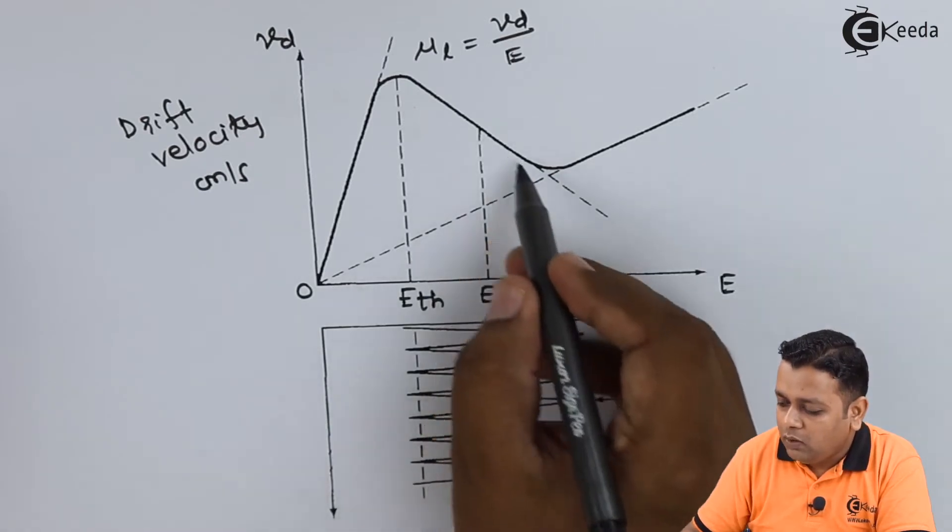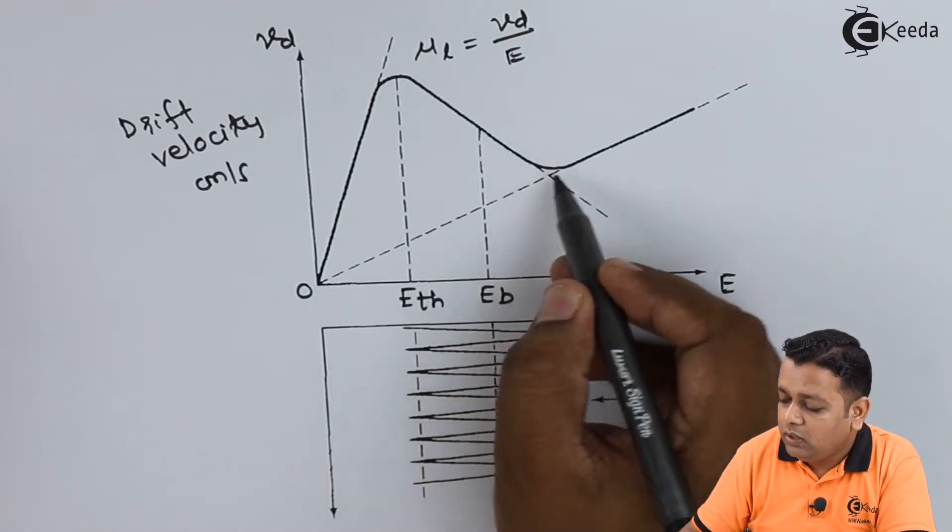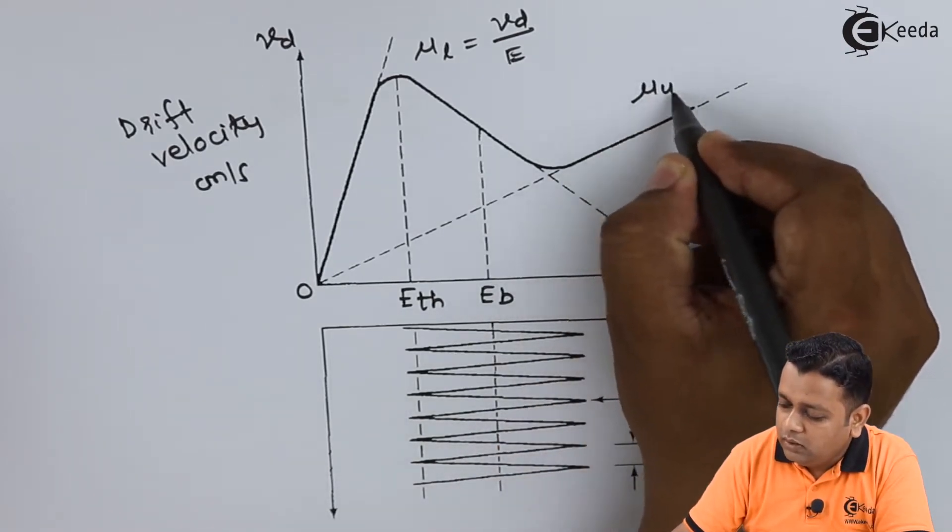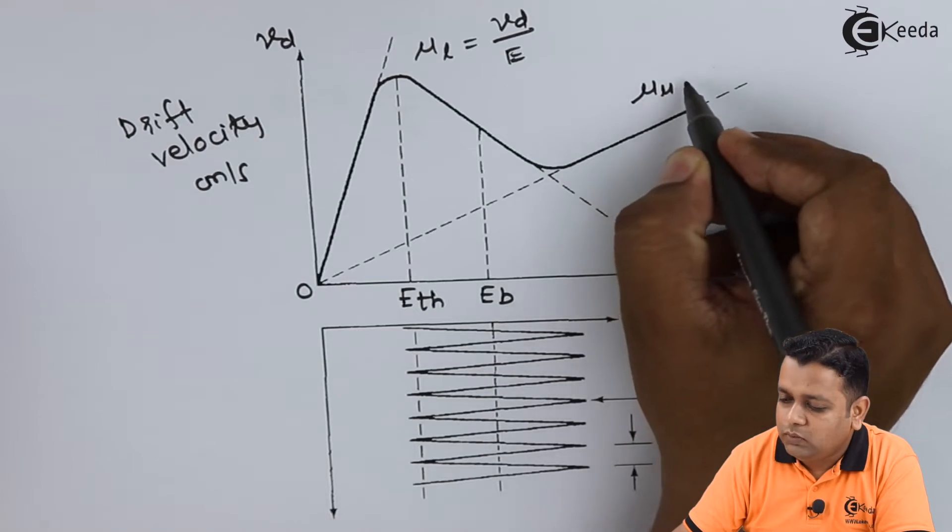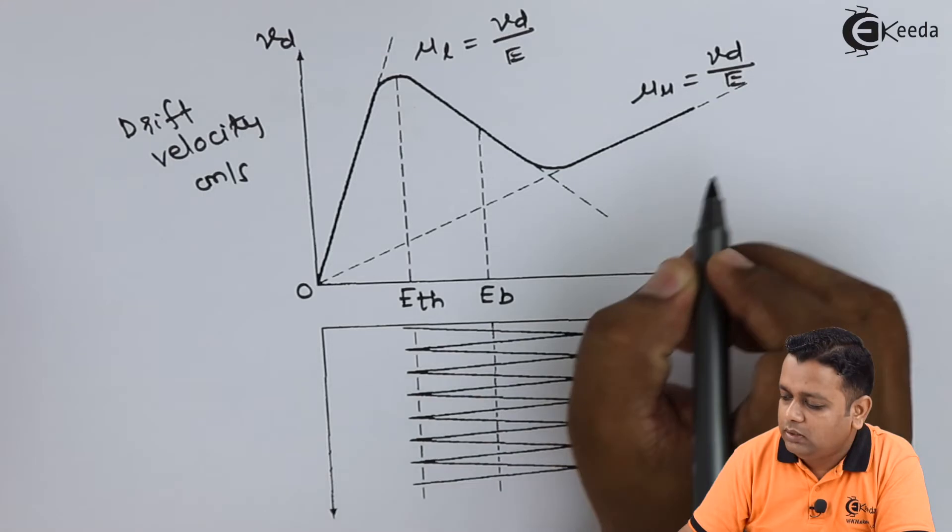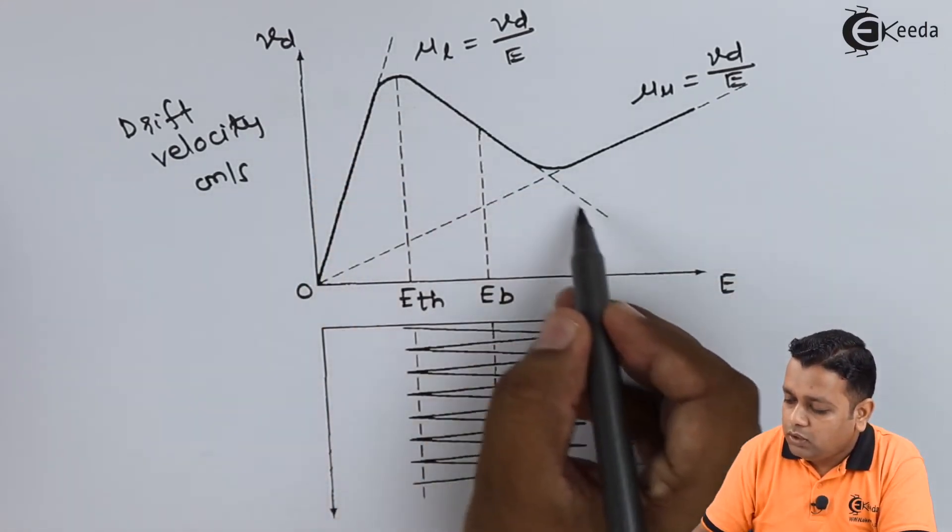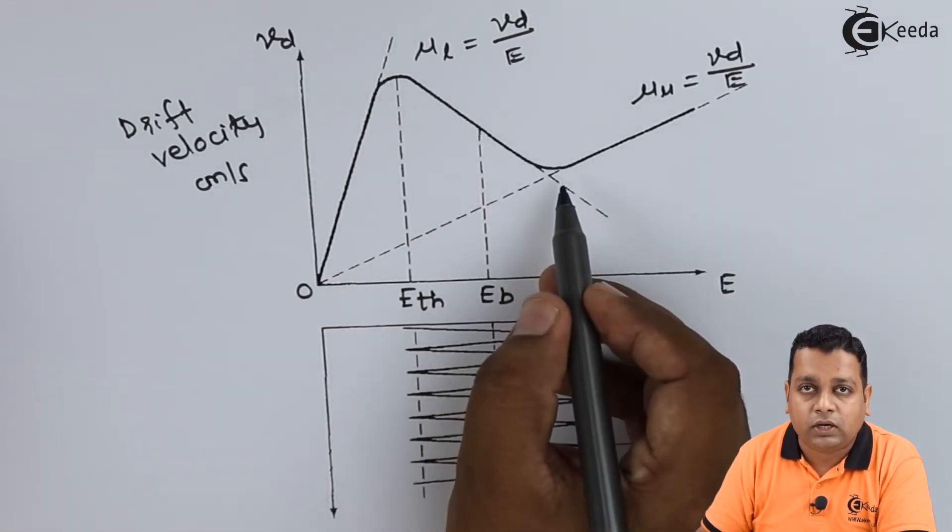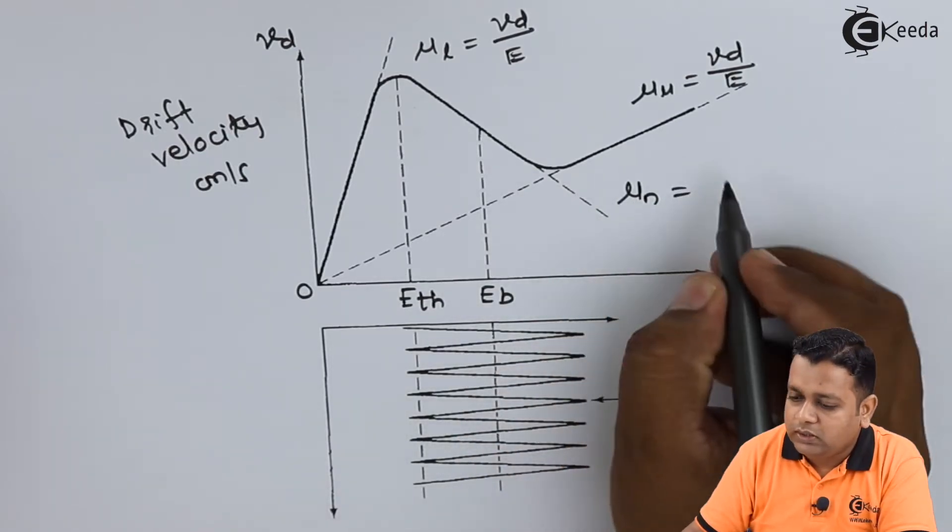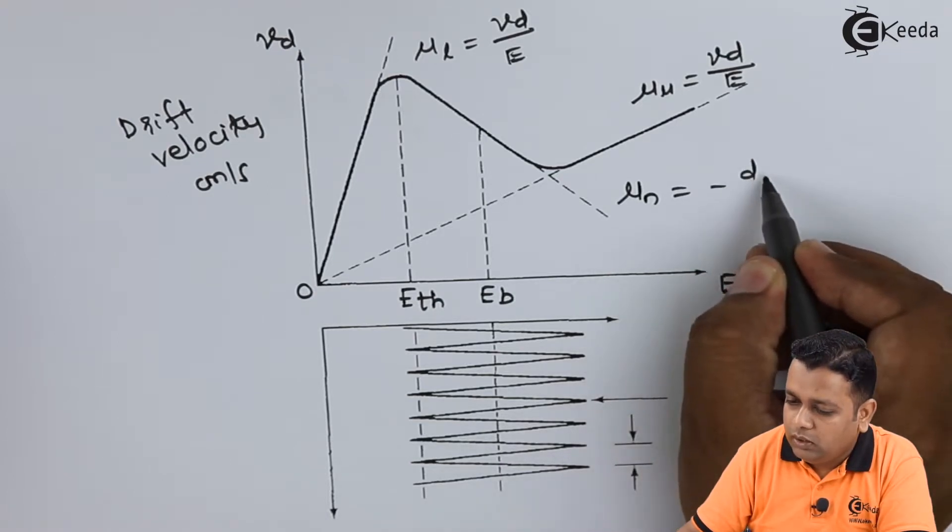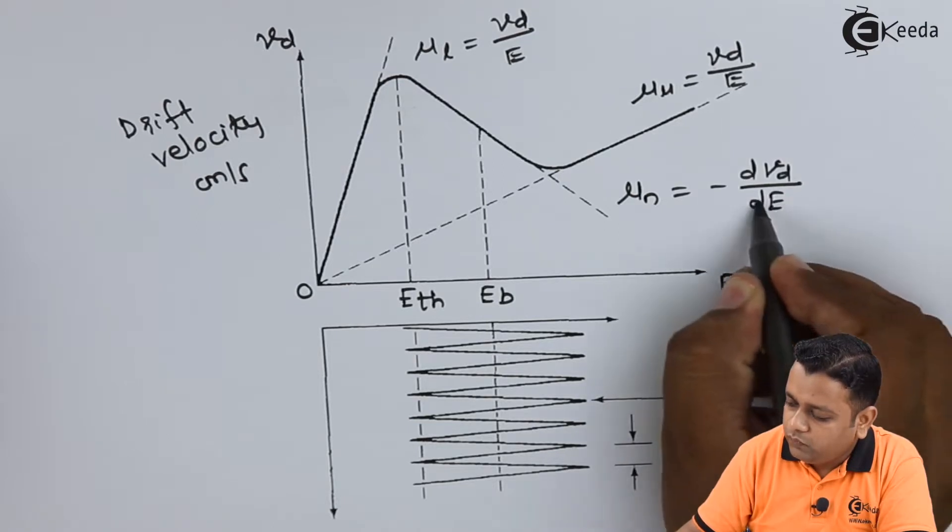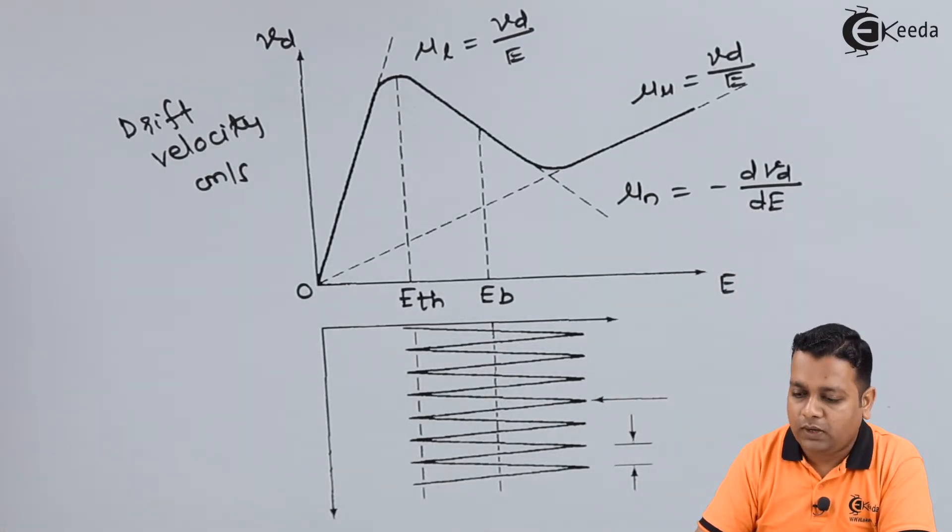We come to this point where we can mark E sub B, and this is the value point. After that we have a sustained value of velocity. Here the mobility we can denote as mu sub U equals the ratio Vd divided by E. If the drop down continues, this is into the negative. The negative mobility can be denoted as mu sub N. It is actually a negative differential of the drift velocity with respect to the electric field applied.